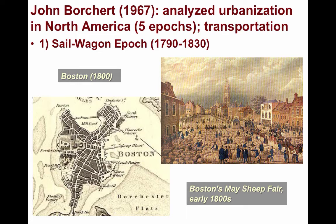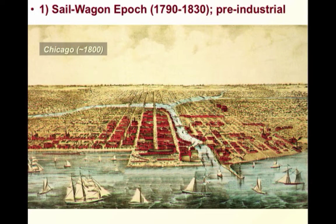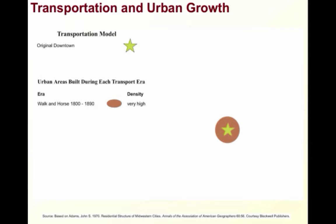The first was the Sail-Wagon Epoch, which began around 1790 up through 1830. These cities emerged in the pre-industrial era. The movement of people was limited and slow because of the difficulty of overland and waterway transportation. People either traveled on foot, with horses and wagons, or on sailboats. Looking at this graphic, you can see the Sail-Wagon Epoch and how the central city was quite compact because people had to have close access to the CBD. This was the starting point of what would eventually become the concentric zone model.